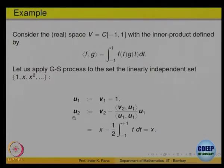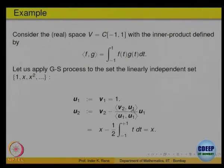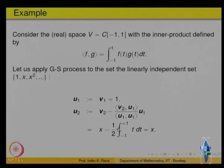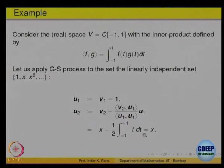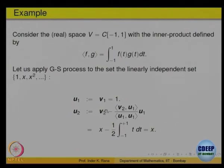So what will be u1? That vector is the same as v1 — it is the constant function 1. Then u2: from v2, remove the projection. The dot product involves the integral from -1 to 1 of v2·u1 dx. Computing that: it comes out to be half of the integral from -1 to 1 of t dt. The integrand is an odd function, so that integral is 0. So u2 = x. Thus u1 = 1 and u2 = x — the first two are perpendicular to each other; Gram-Schmidt gives nothing new here.